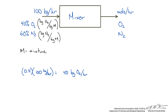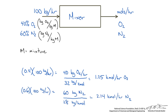Now if we wanted to convert this to a molar flow rate, we would divide by the molecular weight of oxygen and we would get 1.25 kilomoles per hour of oxygen. We do the same thing for nitrogen and get 2.14 kilomoles per hour of nitrogen.